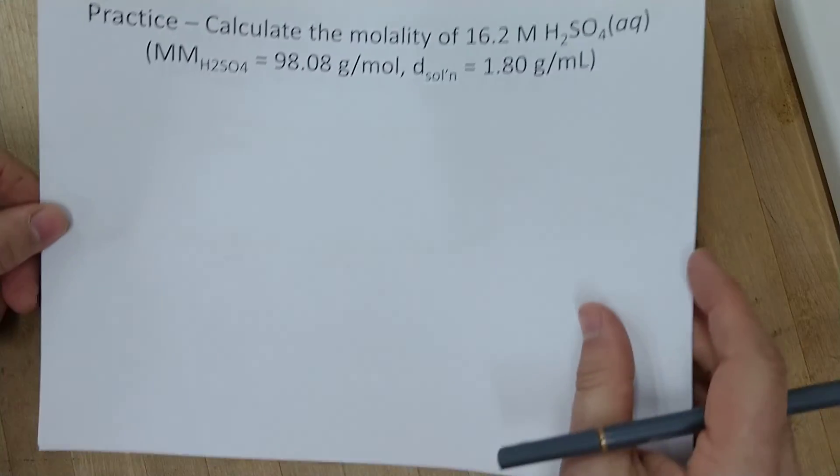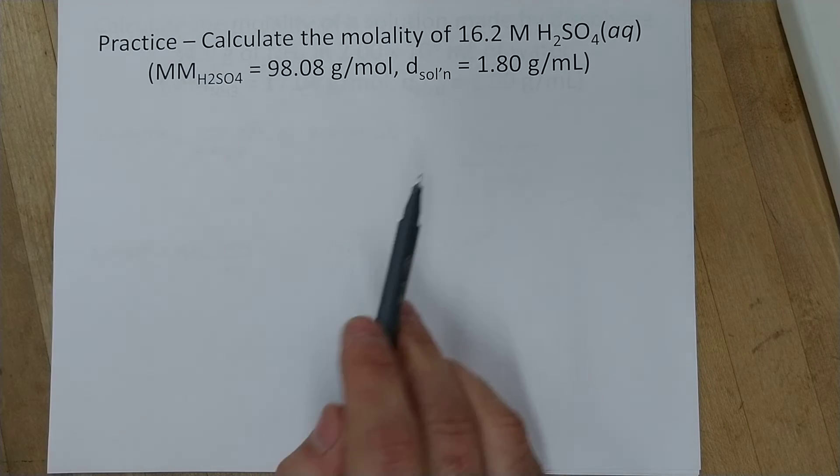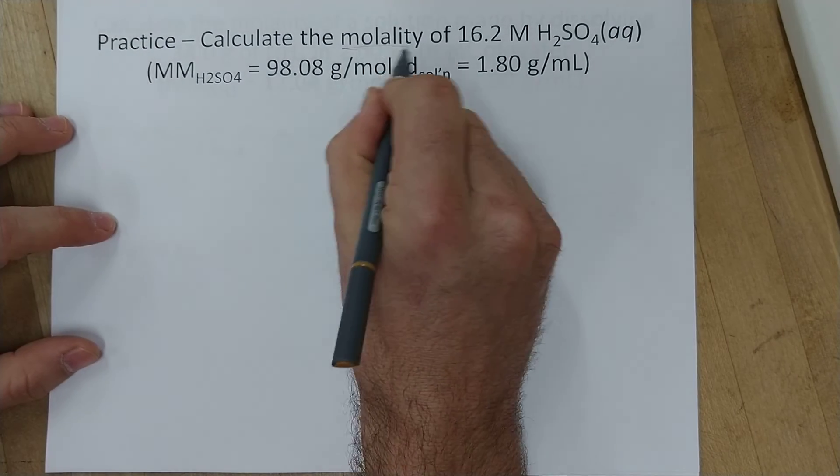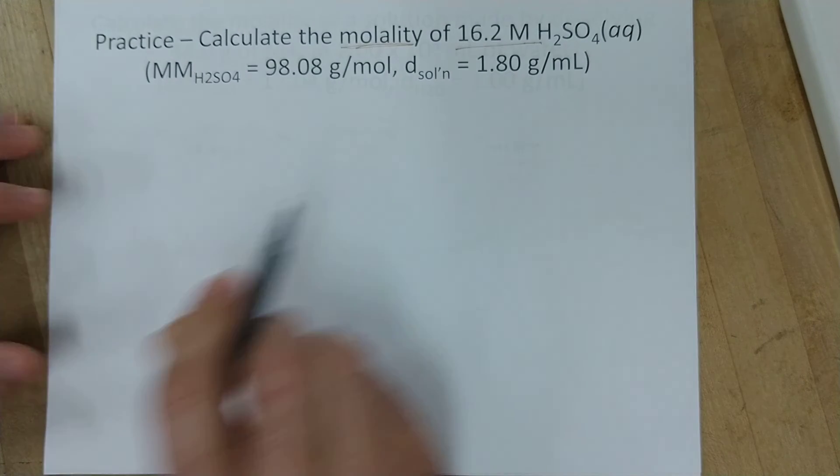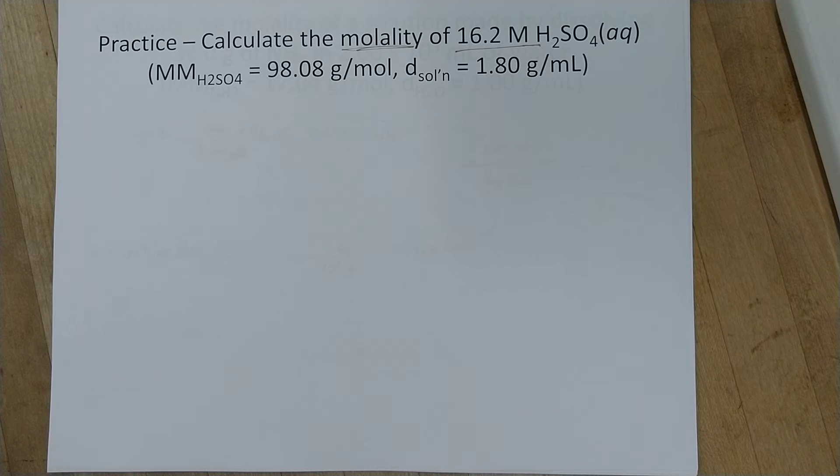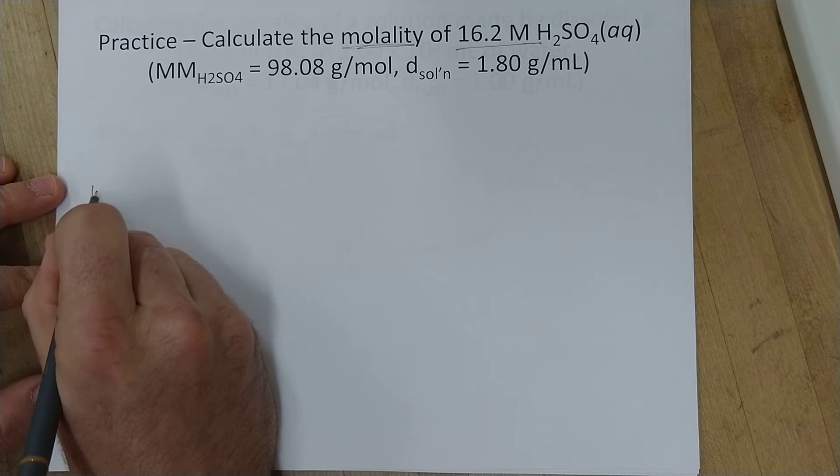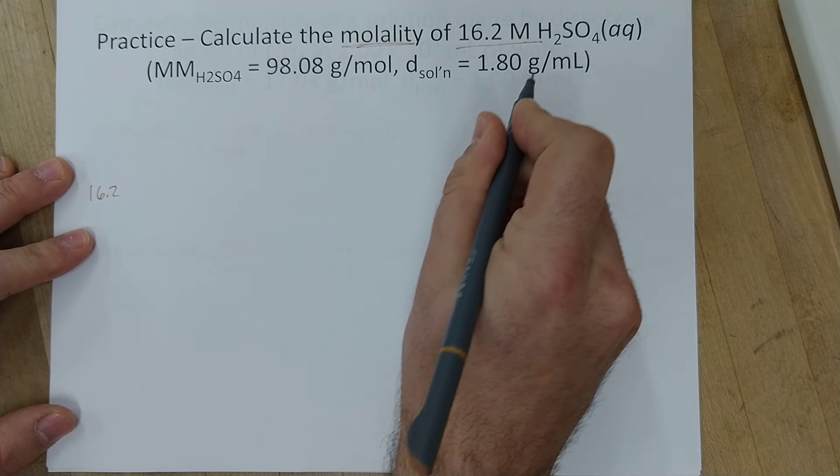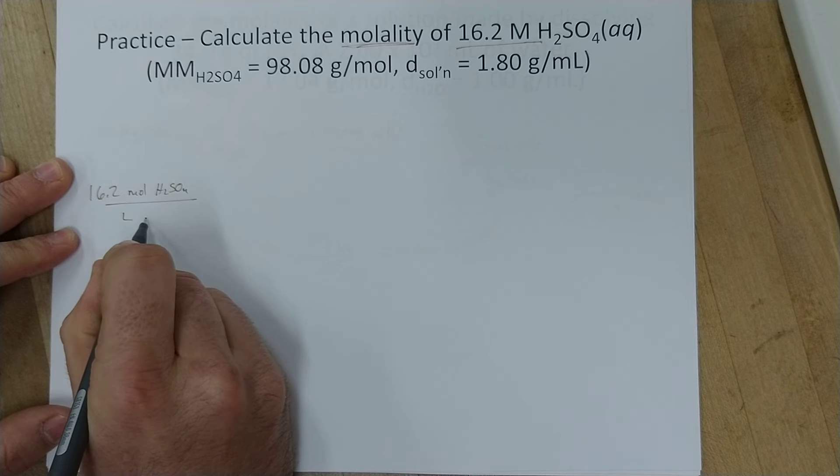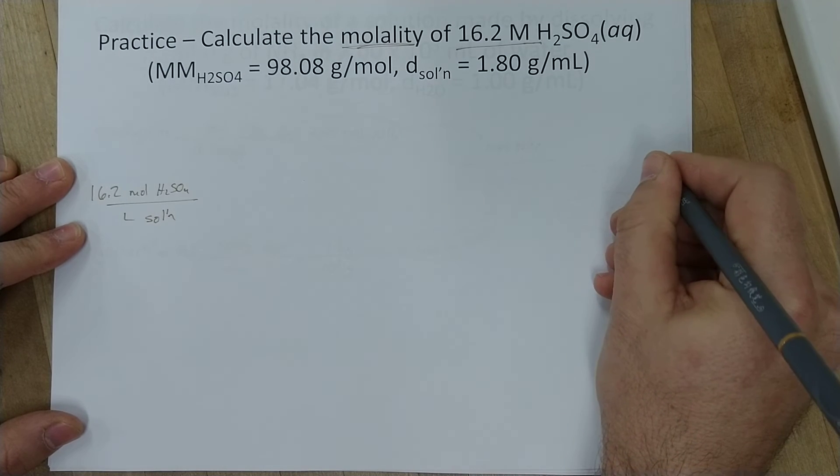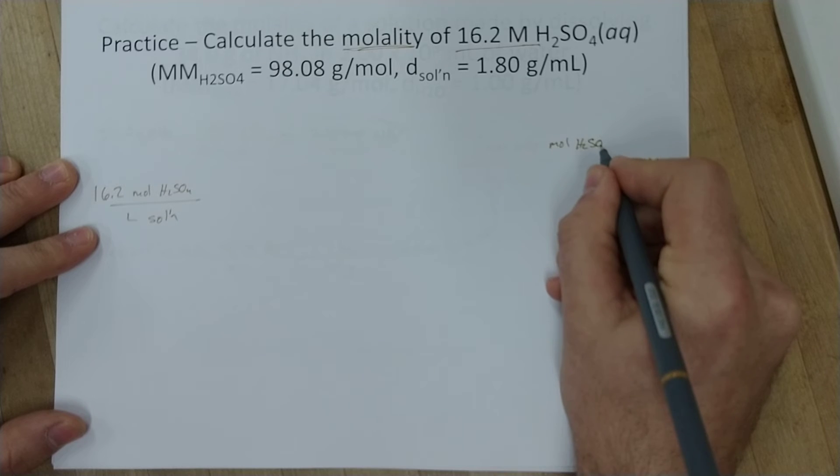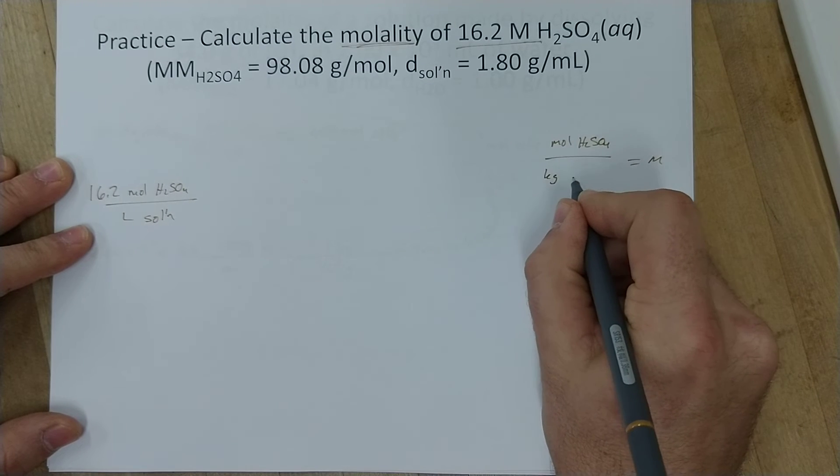But the worst thing that you can have to do here is to convert from one different concentration unit into a molality. So this practice problem says, calculate the molality, the molality of a 16.2 molarity H2SO4 solution. And it's giving you some molar masses and densities to work with there. So let's break this down. We have 16.2 molarity sulfuric acid, which is 16.2 mols of H2SO4 per liter of the solution. And we're trying to get to molality, which is moles of H2SO4 per kilogram of the solvent.